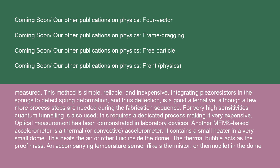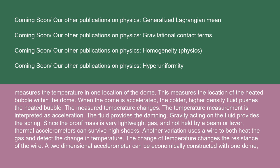For very high sensitivities, quantum tunneling is also used, though this requires a dedicated process, making it very expensive. Optical measurement has been demonstrated in laboratory devices. Another MEMS-based accelerometer is a thermal or convective accelerometer. It contains a small heater in a very small dome that heats the air or other fluid inside. The thermal bubble acts as the proof mass. An accompanying temperature sensor, like a thermistor or thermopile in the dome, measures the temperature in one location of the dome to determine the location of the heated bubble. When the dome is accelerated, the colder, higher-density fluid pushes the heated bubble and the measured temperature changes, which is interpreted as acceleration. The fluid provides the damping and gravity acting on the fluid provides the spring.